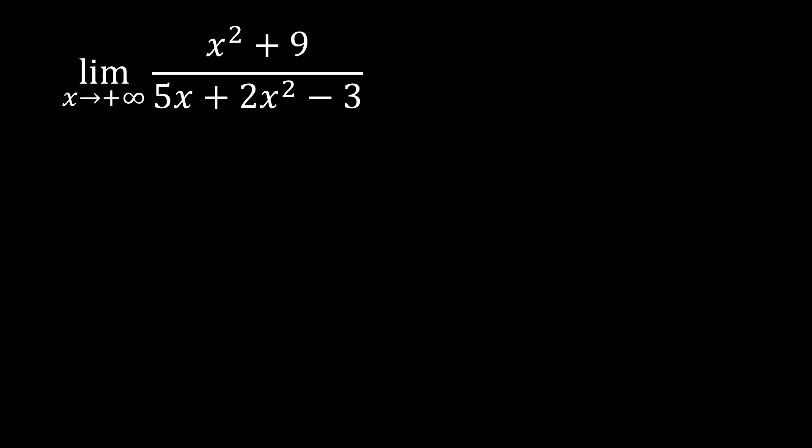It's another math day here with teacher Jenny, joining me for another topic. This time we are going to talk about limits at infinity. This is the Part 3 video for limits at infinity, in which we will be discussing how to find the limit at infinity when you've got a rational function. We have the limit of x squared plus 9 over 5x plus 2x squared minus 3, as x approaches positive infinity.